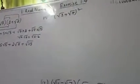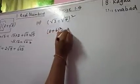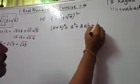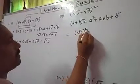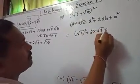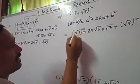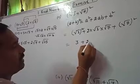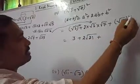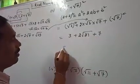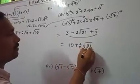Now let us go for another one. It is like A plus B whole square. The identity is A plus B whole square equals A square plus 2AB plus B square. So A square is root 3 whole square, plus 2AB is 2 into root 3 into root 7, plus B square is root 7 whole square. The square root gets cancelled: 3 plus 2 root 21 plus 7. Adding 3 plus 7 gives 10, so the answer is 10 plus 2 root 21.